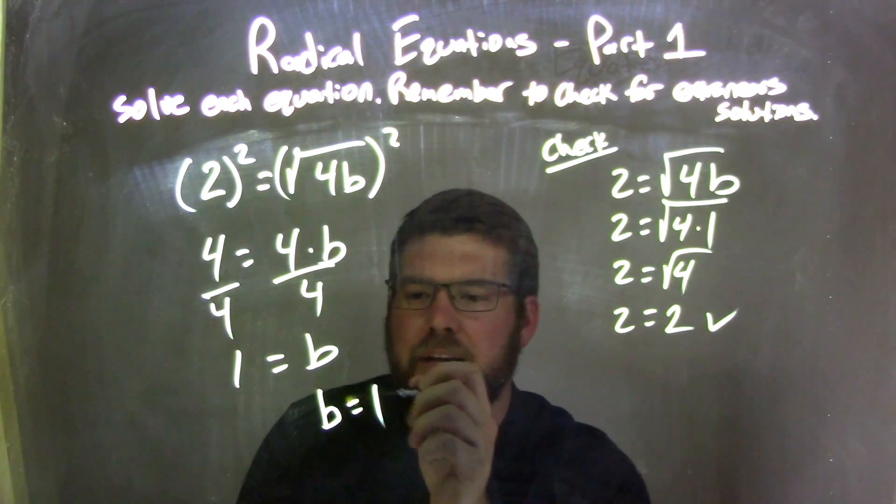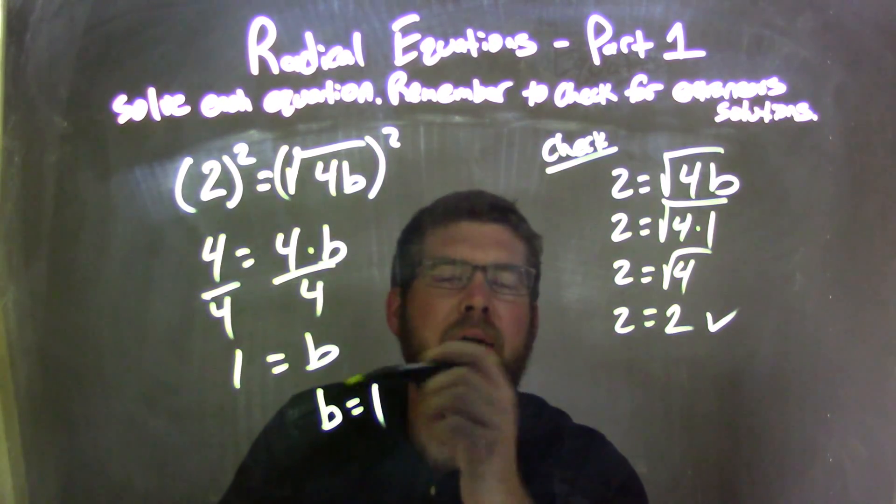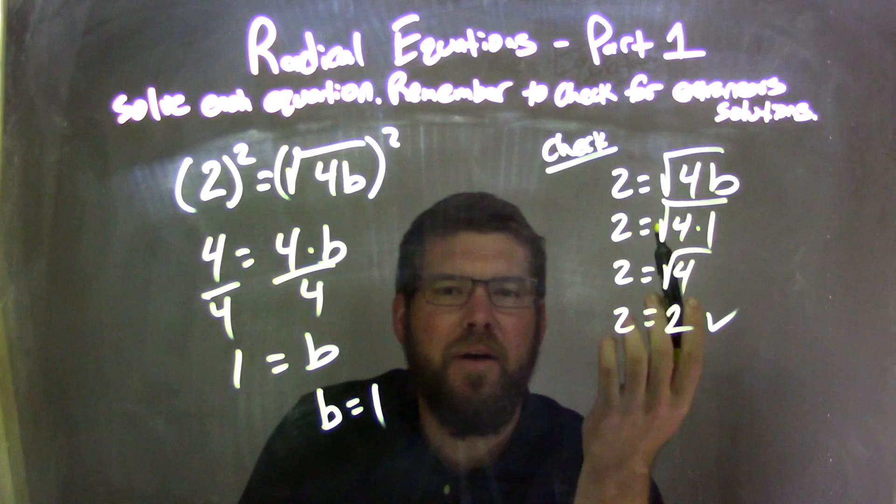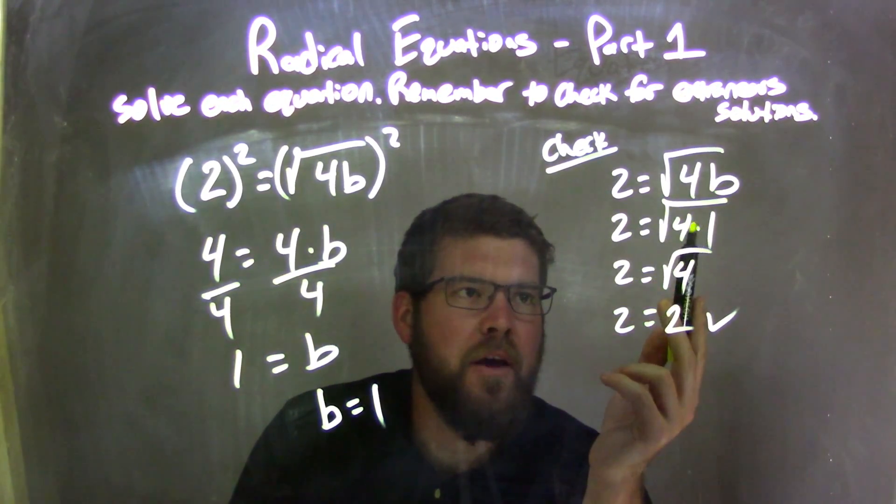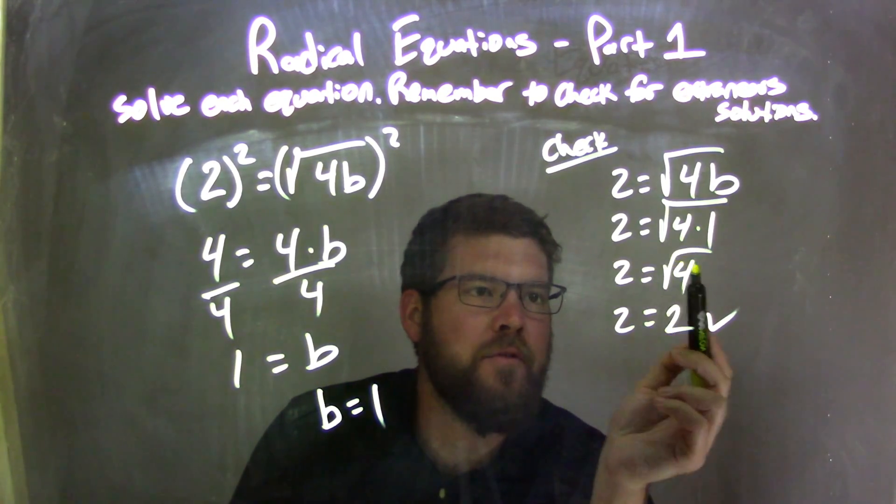I rewrote this to make it nice and neat to have b come first, so b equals 1. I then checked to see if I had an extraneous solution. So I took my original equation, I plugged 1 in for b. 4 times 1 was 4, square root of 4.